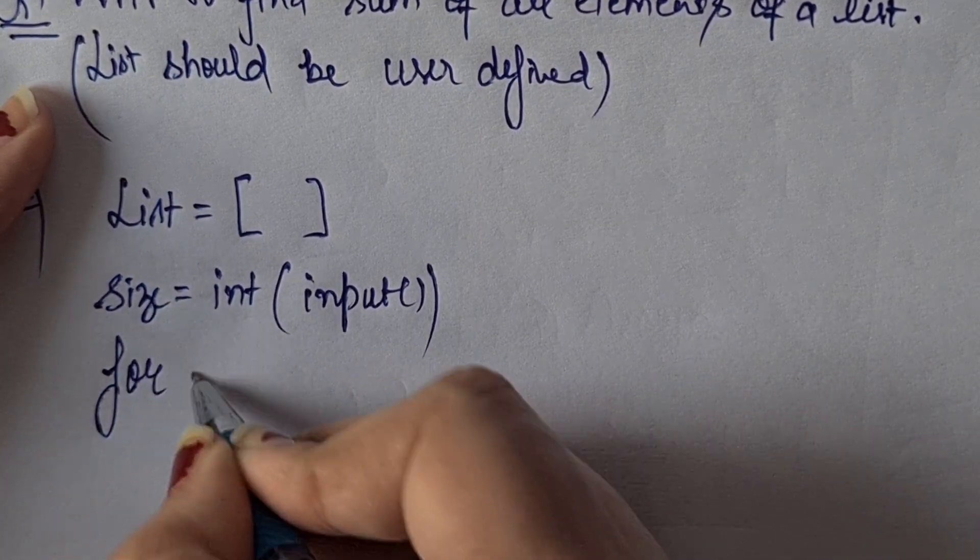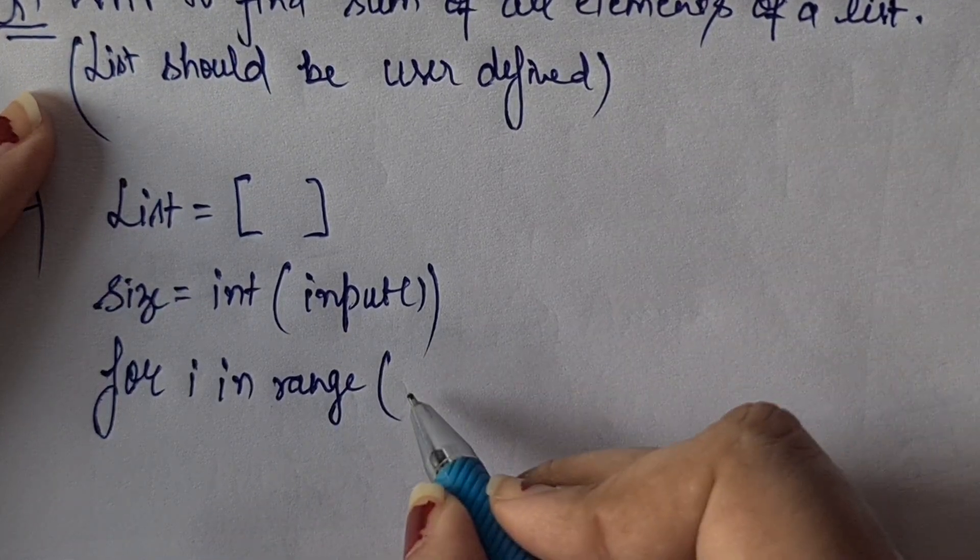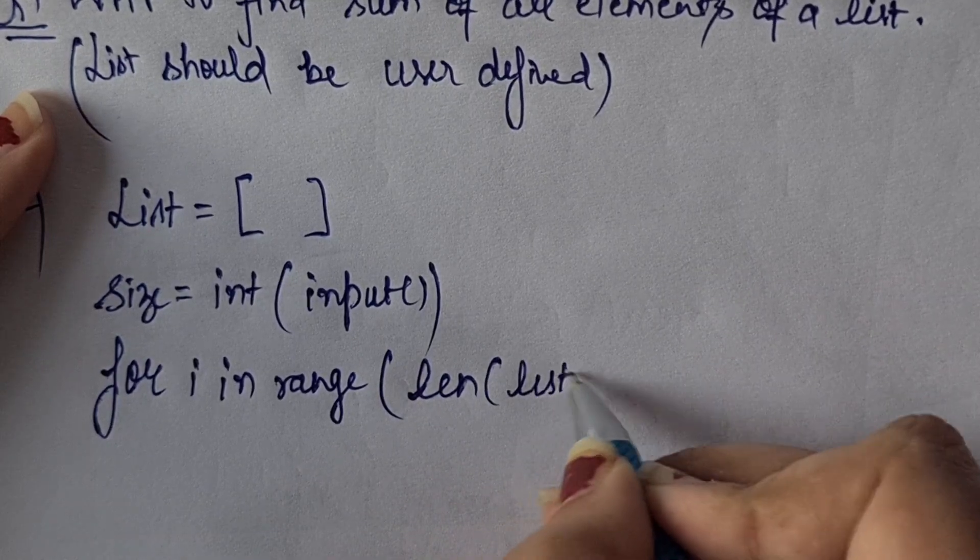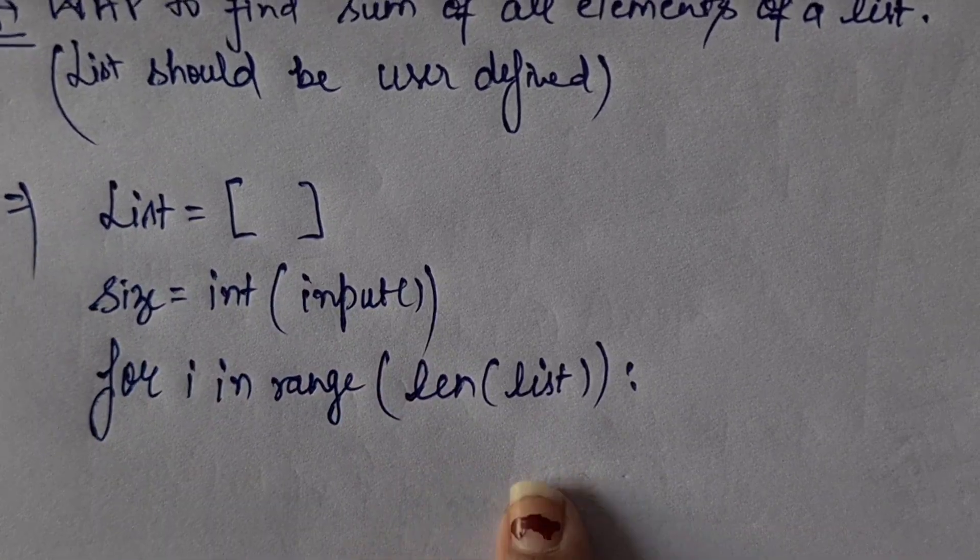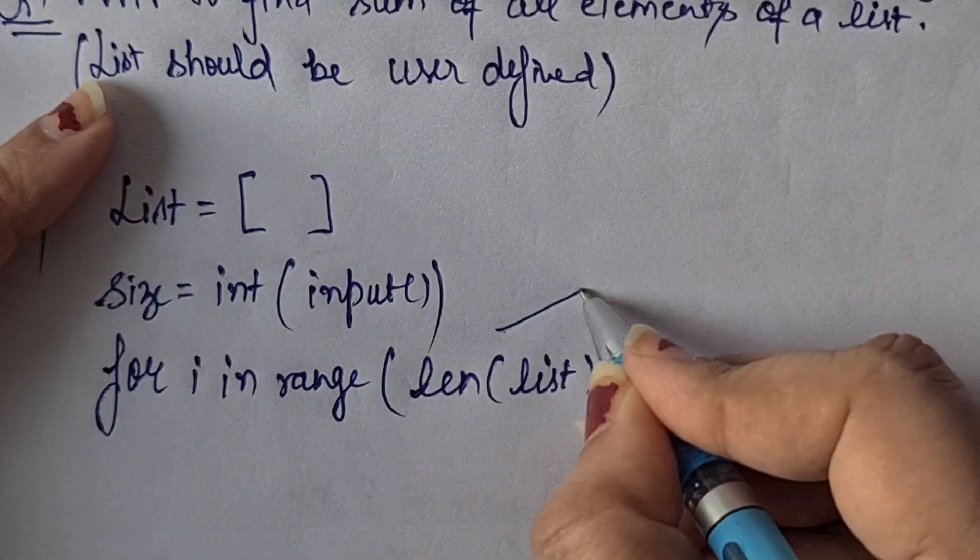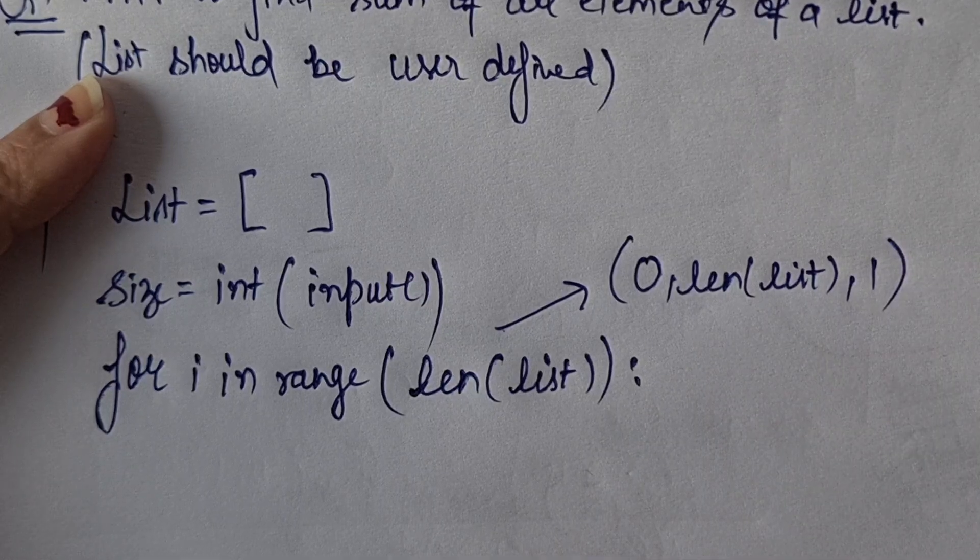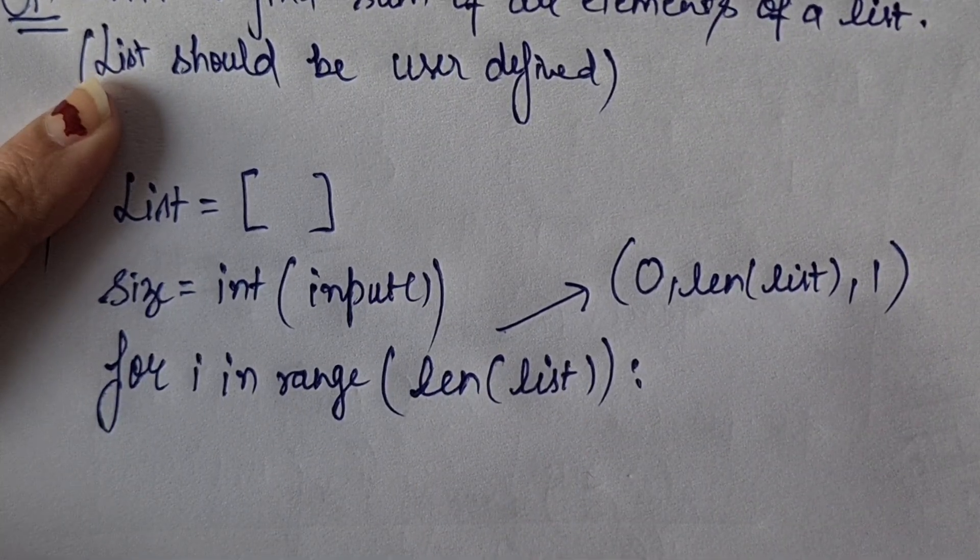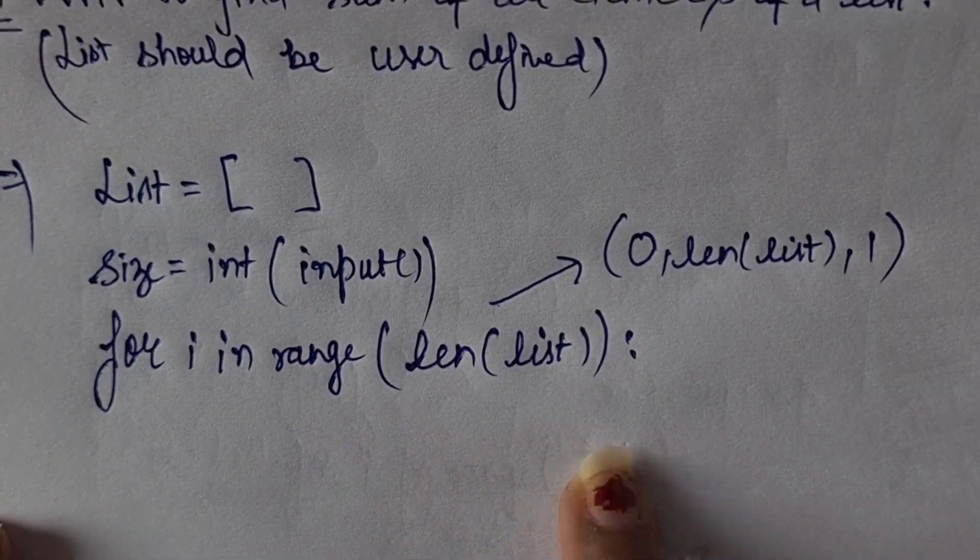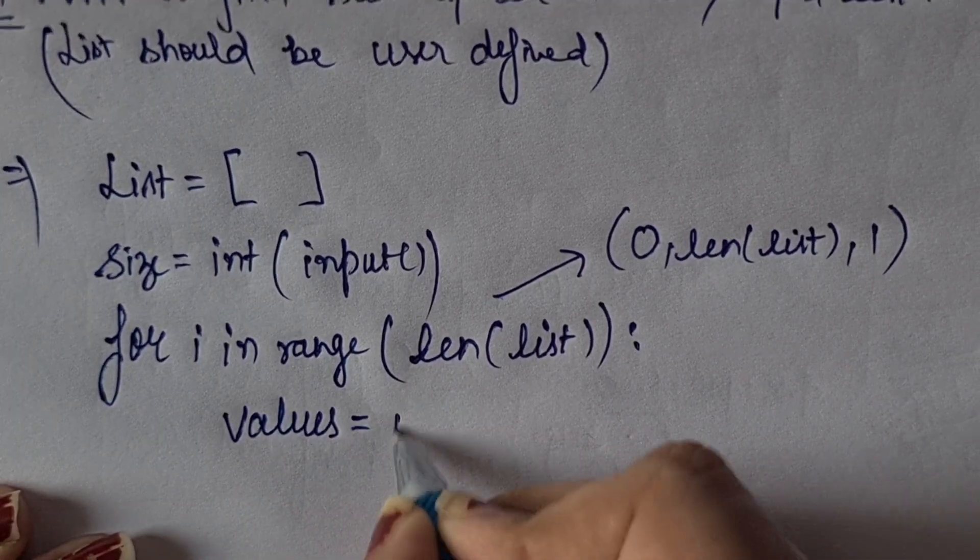Now we will use a loop: for i in range, because looping will happen, repeatedly on each index we have to put values, so obviously iteration will be used. For i in range, how far? Length of list. Whatever the list length is, we will go till there. If I write len of list, by default the step value will be one and by default start will be zero.